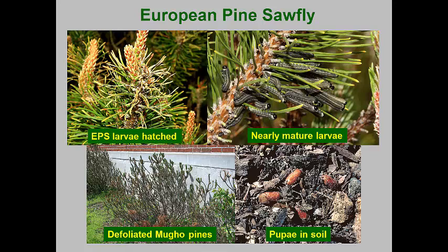As the larvae mature, they continue to feed gregariously for several weeks. Fortunately, the European pine sawfly has only one generation, and they only eat last year's needles. The new candles emerge, sending out new needles, and most defoliated pines survive, but with what looks like a poodle clip. The mature larvae drop to the ground and form pupae in dark brown cocoons.